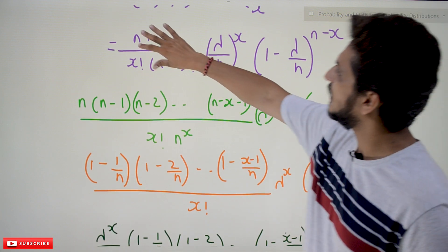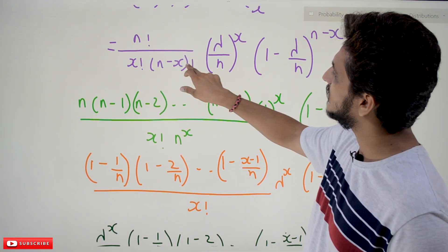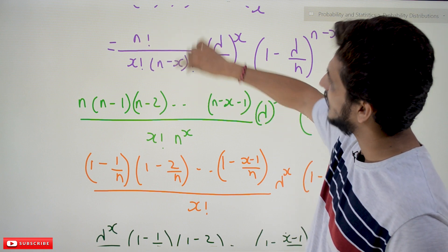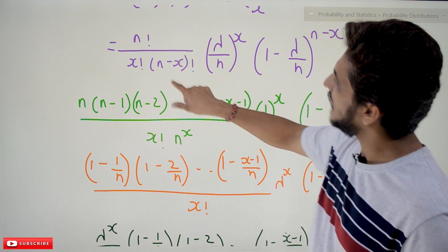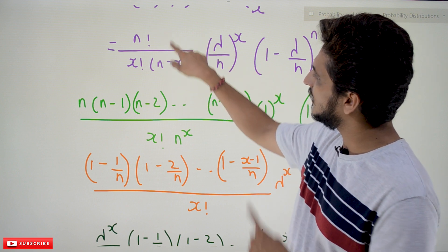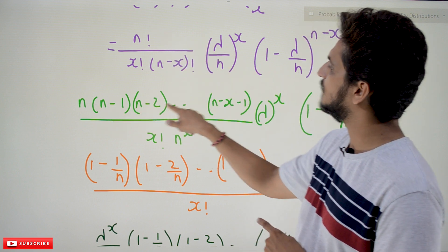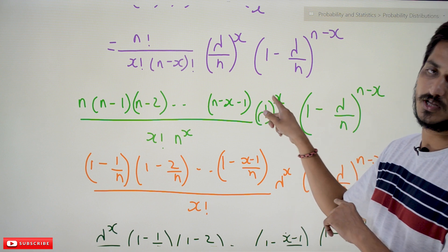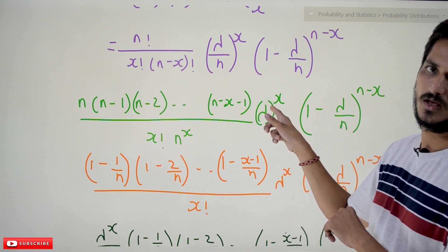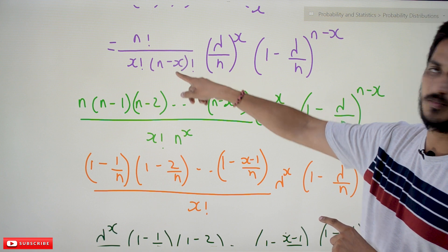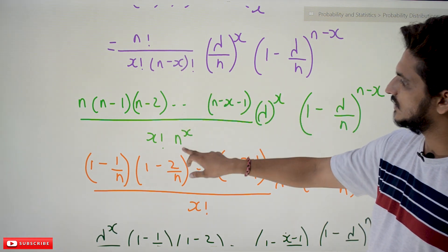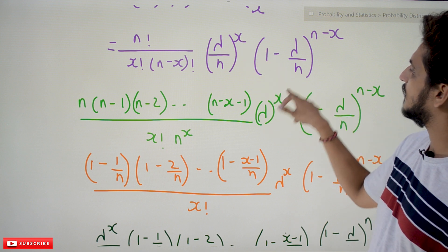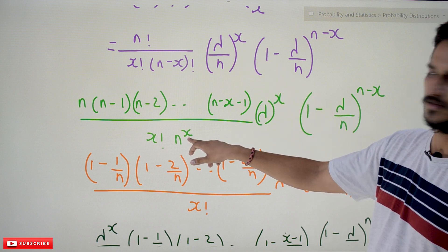In n!/[x!(n−x)!], the (n−x)! in the numerator cancels with the denominator, leaving the product n·(n−1)·(n−2)·…·(n−x+1) in the numerator. Then (λ/n)^x is written as λ^x / n^x.